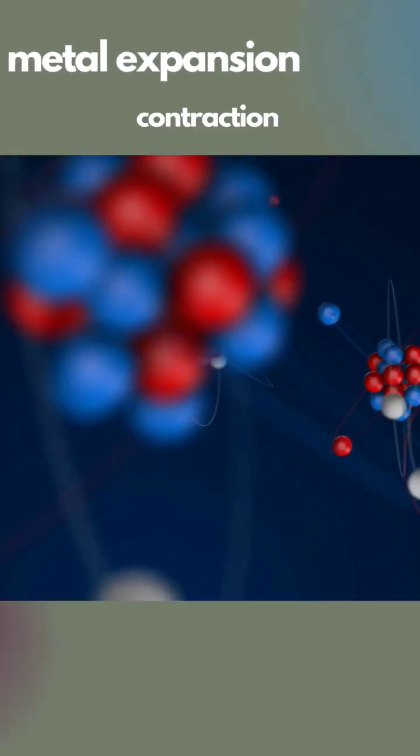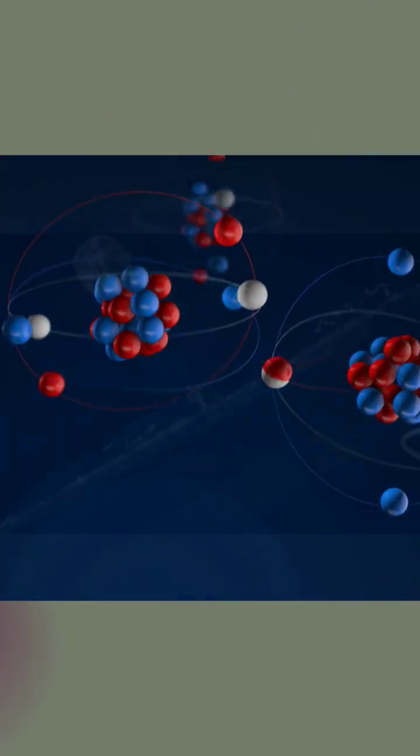But why do these whiskers form? It's all due to the repeated cycle of metal expansion and contraction, which can lead to the formation of cracks that grow into needle-like whiskers.